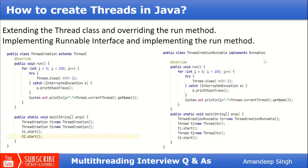The other way is implementing the Runnable interface. Instead of extending Thread, we implement the Runnable interface and override the run() method with our logic. The difference is in how we create and start the thread: when implementing Runnable, we first create an object of our class, then create a Thread object and pass that Runnable instance as an argument to the constructor, and then call the start() method on the Thread object.